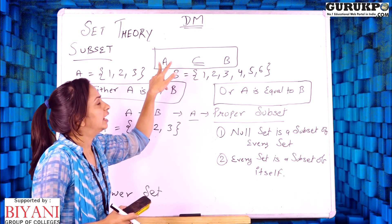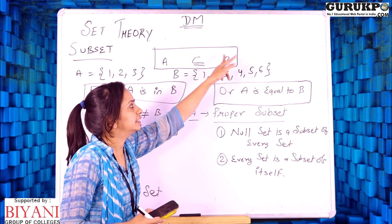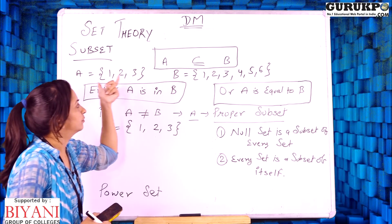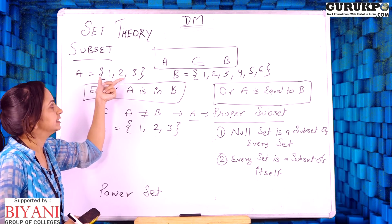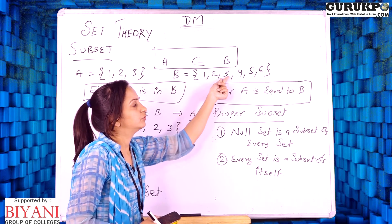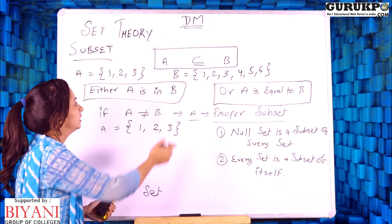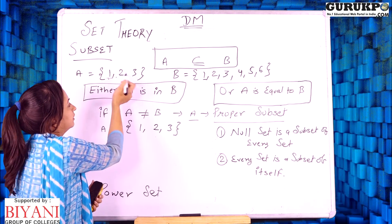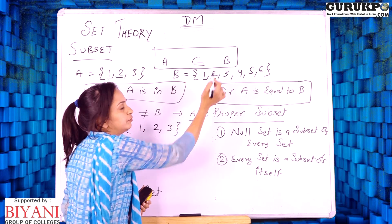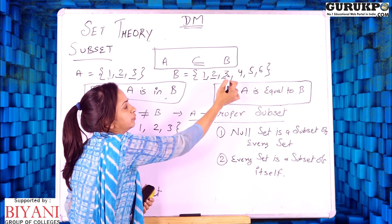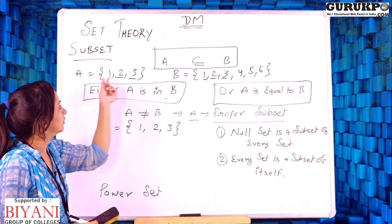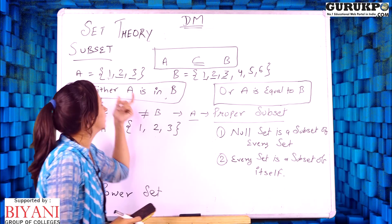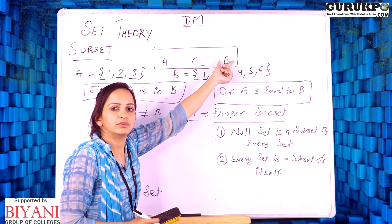If every element of set A is also present in set B, then set A is called the subset of set B. For example, set A = {1, 2, 3} and set B = {1, 2, 3, 4, 5, 6}. Every element of set A — 1, 2, and 3 — is also present in set B. So according to the definition, set A is a subset of set B.